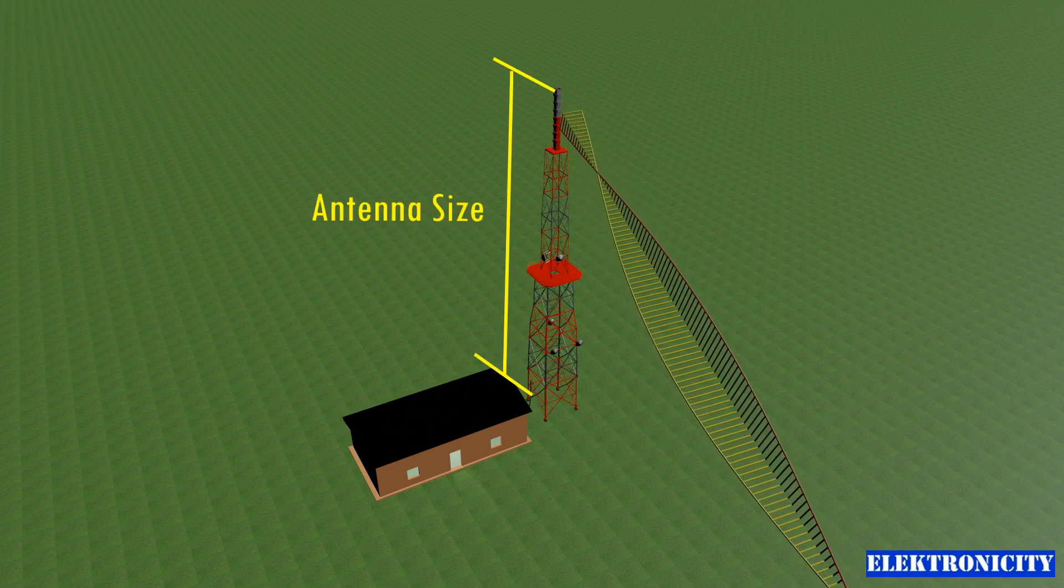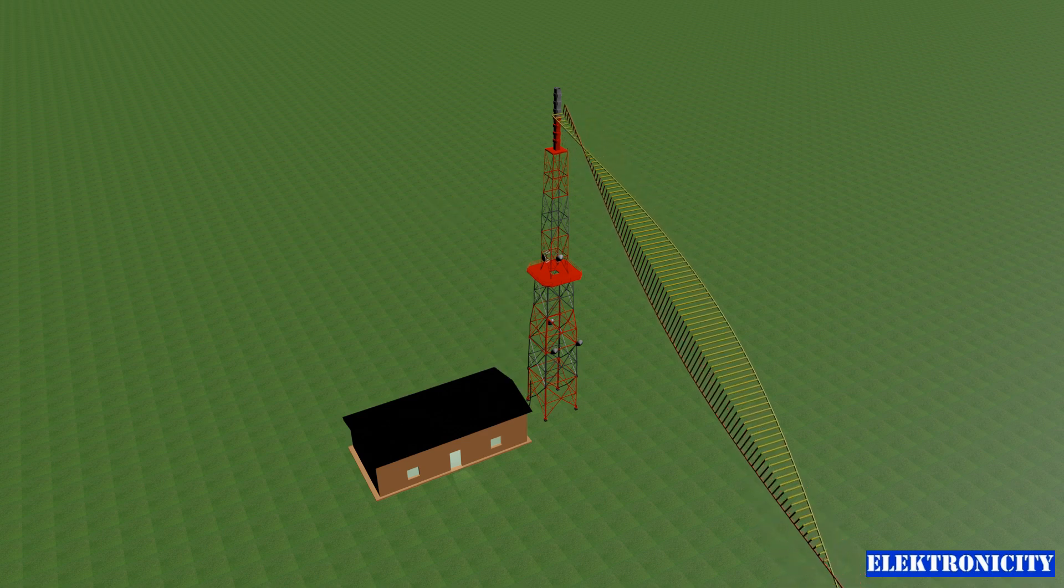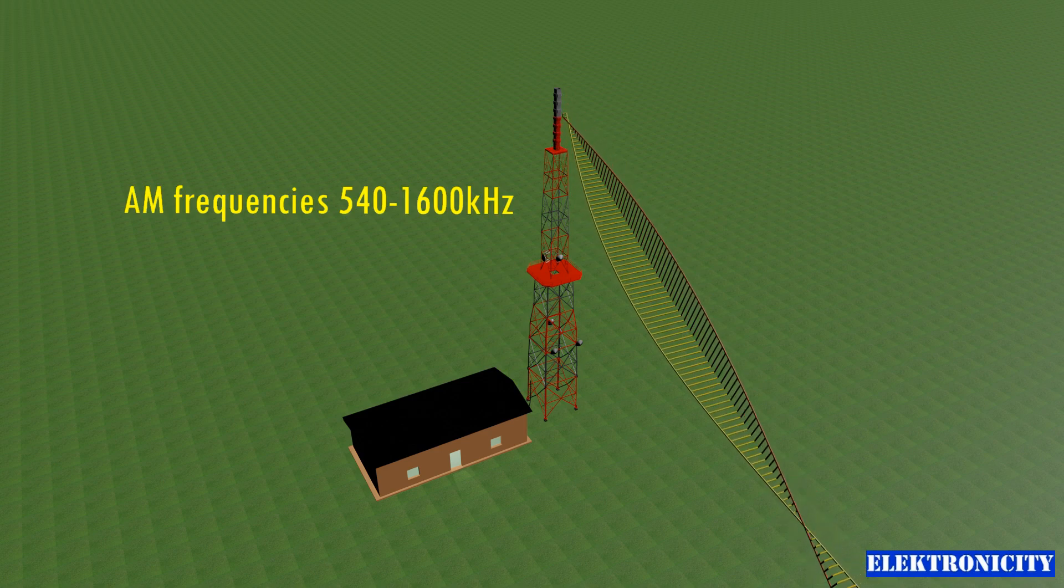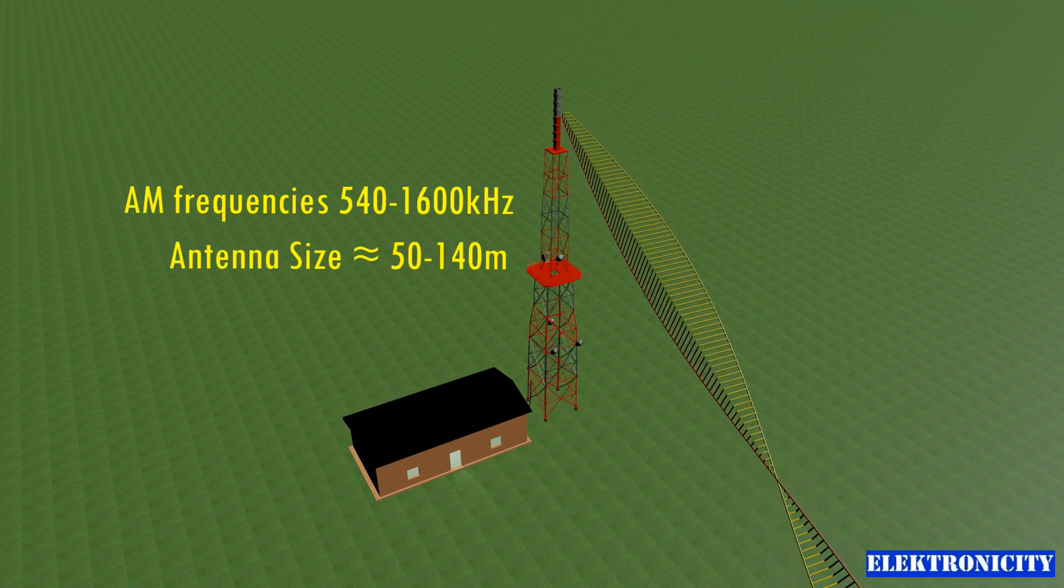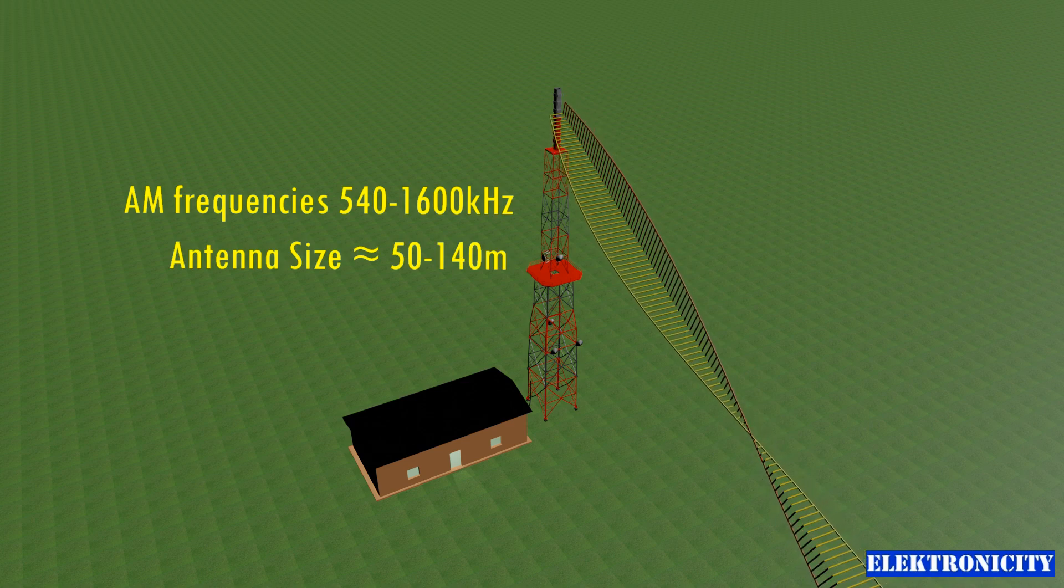The size of AM broadcast antenna is quite large due to the AM broadcast frequency range of 540 to 1600 kilohertz, which typically requires antennas to be approximately between 50 and 140 meters in length. That corresponds to a quarter wavelength antenna size.